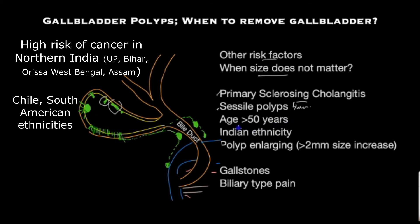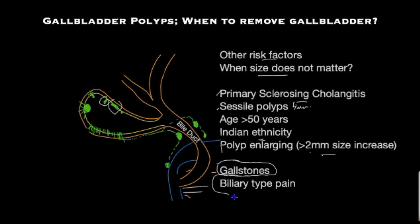In a study in the UK, age greater than 50 and Indian ethnicity were associated with malignancy in the presence of a gallbladder polyp. If a polyp is enlarging at a rate of 2 millimeters or greater within a year, that is another risk factor. The presence of gallstones has also been considered a risk alongside gallbladder polyps. Finally, patients with biliary-type pain and a gallbladder polyp should strongly consider having the gallbladder removed.